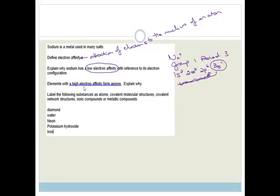It says elements with a high electron affinity form anions. That's basically because if you have a high electron affinity, it means you attract electrons, and electrons have got a negative charge. So obviously if you're attracting electrons, you're going to become an anion. Ta-da!